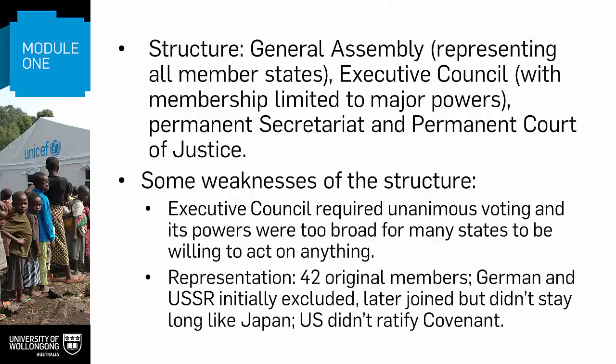The League was made up of a General Assembly representing all Member States, of which there were originally 42, an Executive Council whose membership was limited to major powers, a permanent Secretariat, and a Court of Justice. The structure is really like that of a liberal democratic state. You can think of it as a legislature made up of two bodies — the General Assembly is like a lower house and the Executive Council is like a Senate, but both with no actual legislative capacity in this case. The Secretariat was a rather weak version of an executive and the judiciary is an equivalent to the court system.